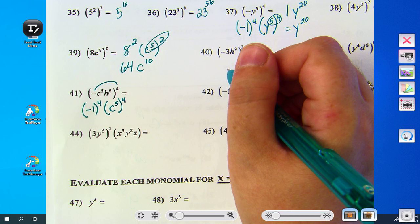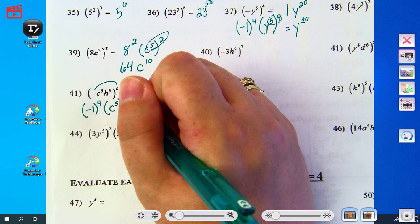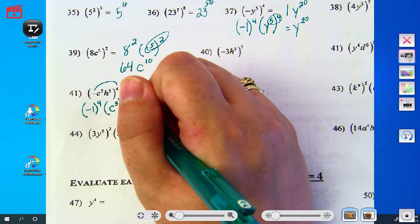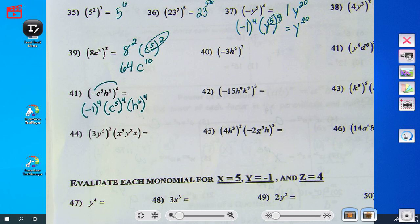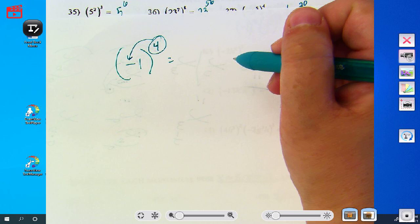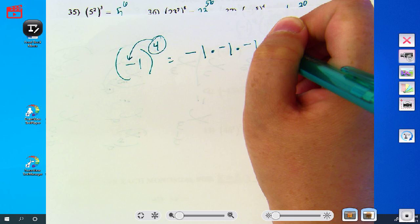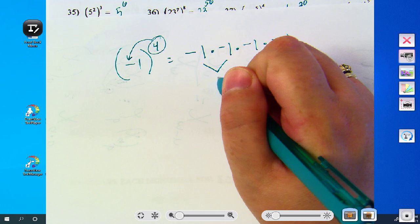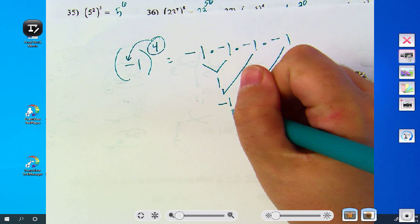Then you raise the c to the fifth to the fourth power, then you raise the h to the sixth to the fourth power. Now, I'm not sure if anyone ever taught you this. One, you want to put this in your calculator with parentheses if you do it with the calculator, but an even number makes the negative go away. Because negative one times negative one times negative one times negative one, these are positive one. Positive one times negative one is negative one. Negative one times negative one is positive one.